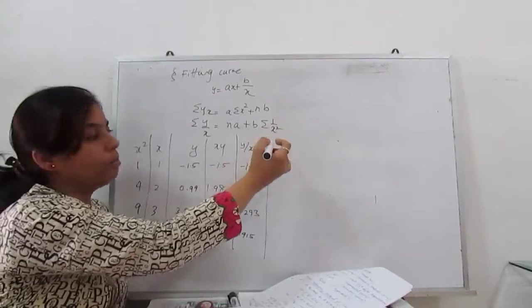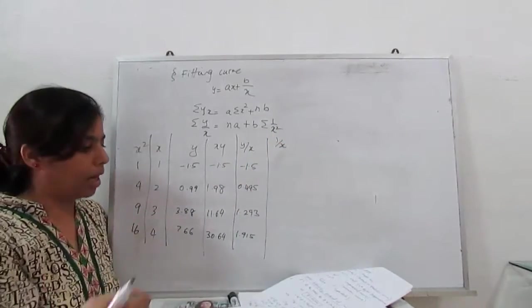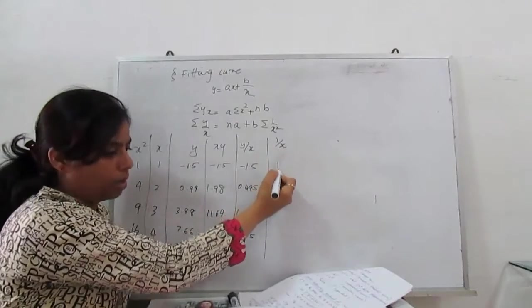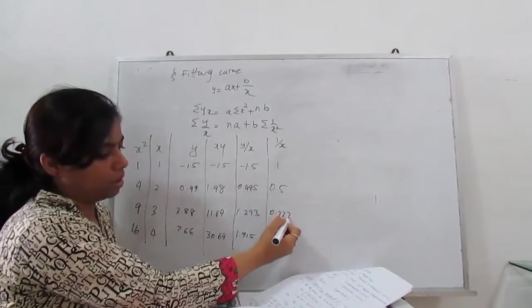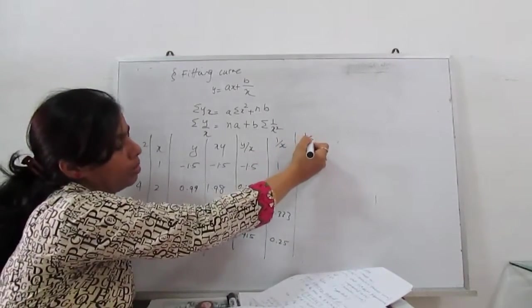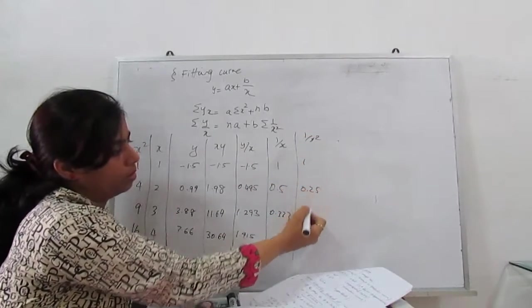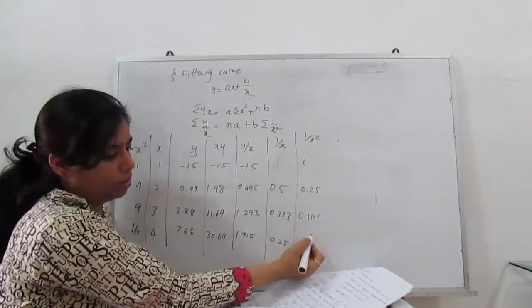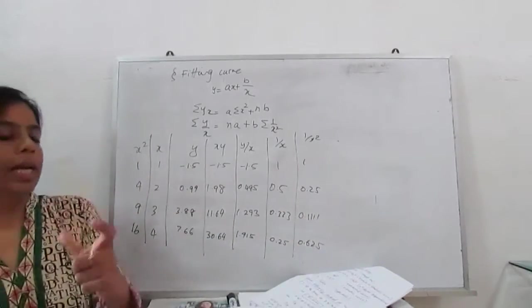Next, I need 1 by x square. So 1 by x and then 1 by x square. So 1, 0.5, 0.333, 0.25. Then 1 by x square is 1, 0.25, 0.1111, 0.625.